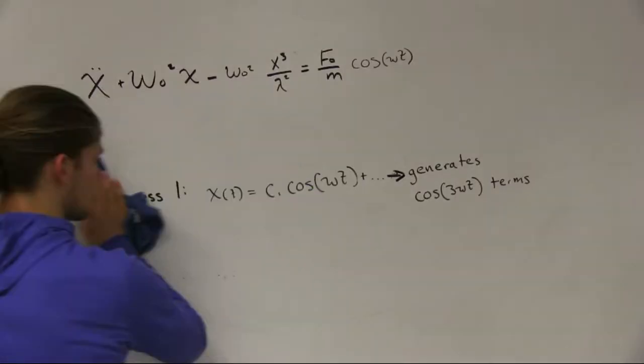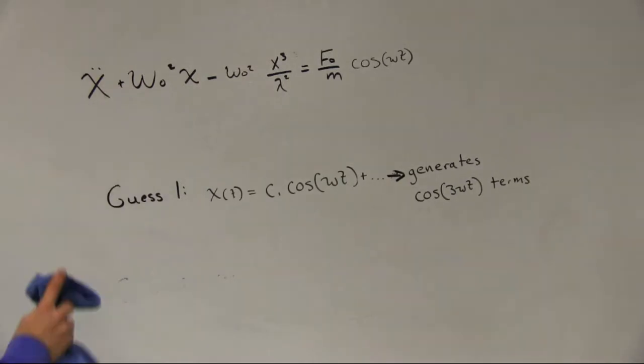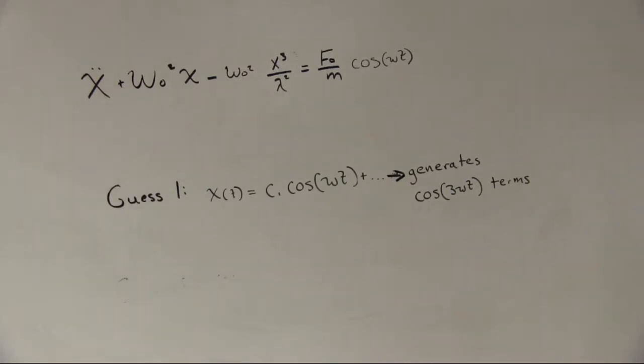In making a guess for the solution of the system, if we choose a solution with the form C1 cosine omega t, the cubic term will generate a cosine of 3 omega t. This can be seen by using a trig expansion with Euler's formula. Since we will generate a cosine of 3 omega t term with our first guess, let's include this in our second guess.